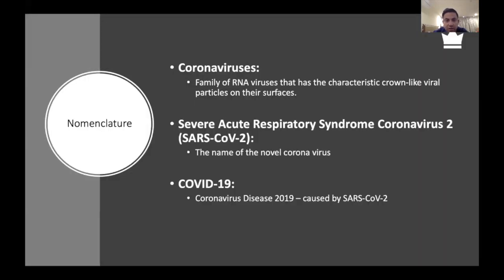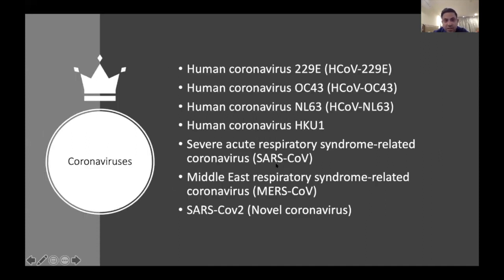Regarding nomenclature: coronavirus is the family of RNA viruses that SARS-CoV-2, or Severe Acute Respiratory Syndrome Coronavirus 2, belongs to. COVID-19 is the name of the disease. SARS-CoV-2 is not the only coronavirus that infects humans — there are seven human coronaviruses, four of which cause only mild symptoms and mostly upper respiratory tract infections. SARS, MERS-CoV, and now SARS-CoV-2 are the ones that caused severe disease.